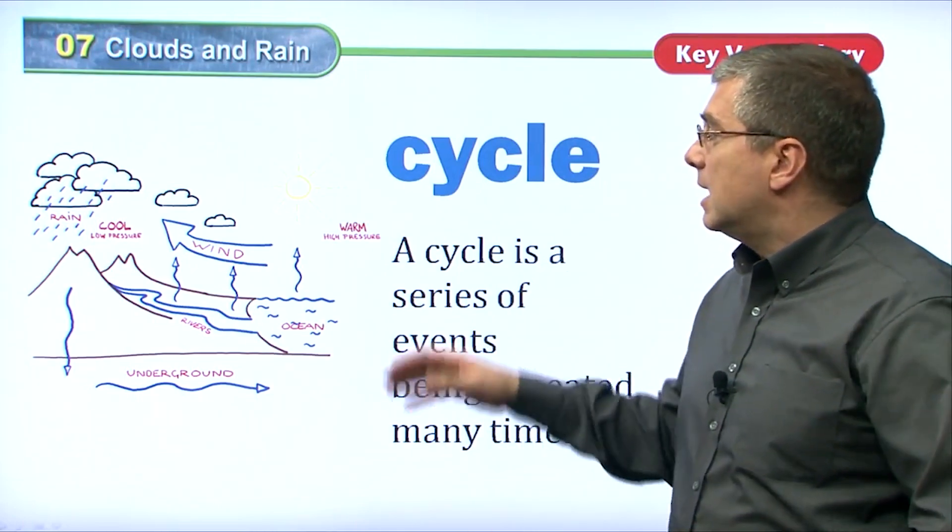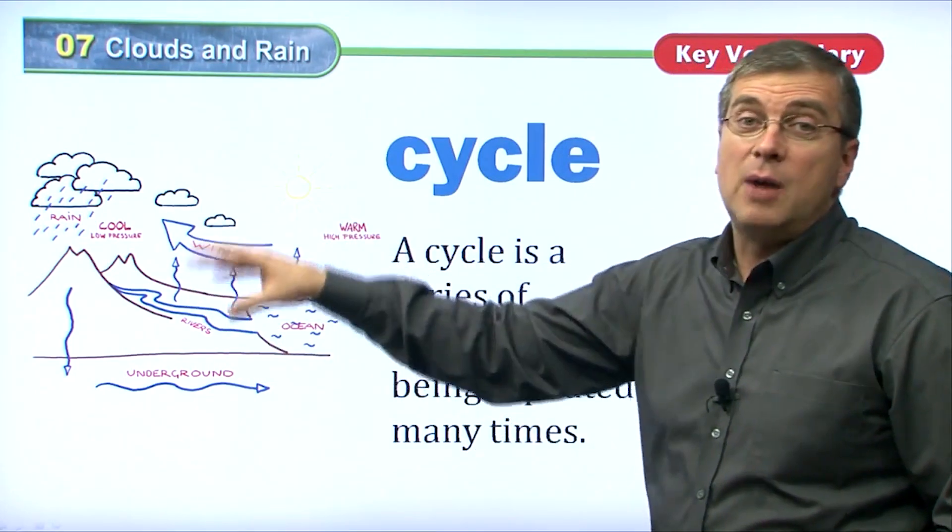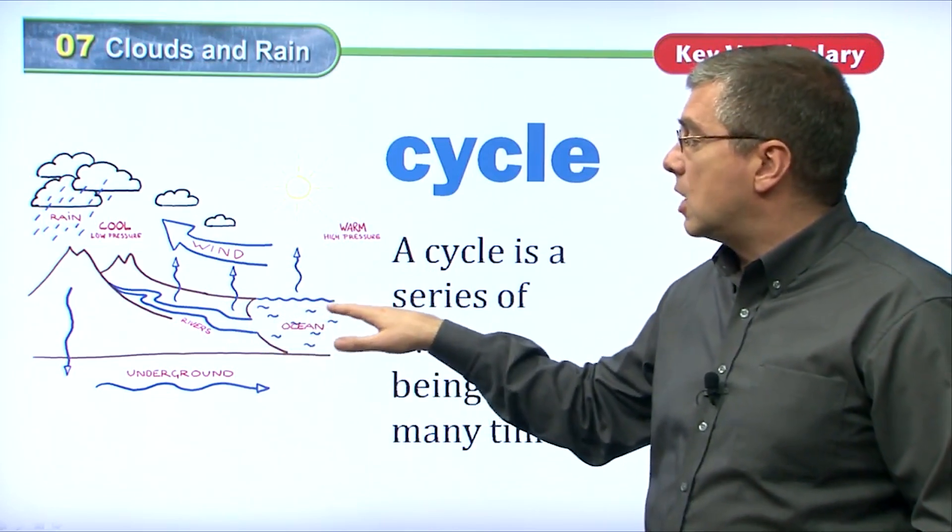A cycle is a series of events being repeated many times. As we can see, if we're talking about water, this looks like a very complicated diagram. But basically, we can start off with the ocean.